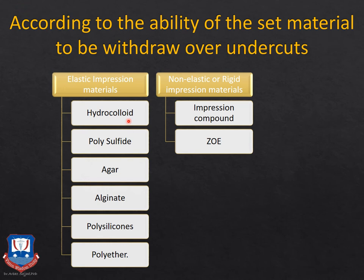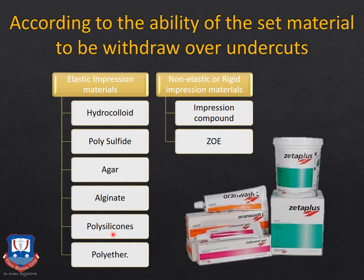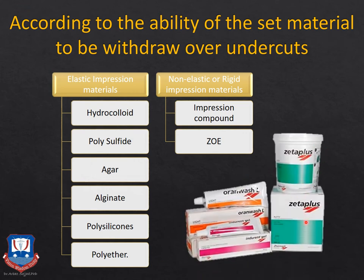We also have rubber-based impression materials. The first rubber-based impression material used in dentistry was polysulfide, also known as mercaptan rubber. After that, we have agar agar — also known as reversible hydrocolloid — which is extracted from seaweed or sea algae. We also have silicones, broadly categorized into two types: condensation silicone (for example, Zeta Plus putty and Ora-Wash light body) and the catalyst used to activate them.